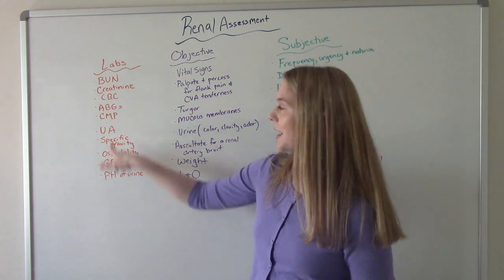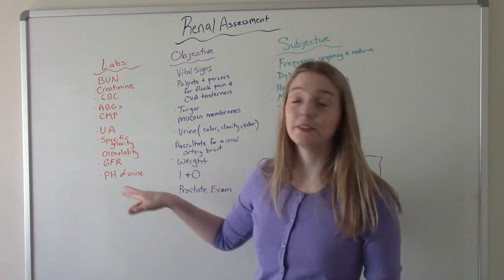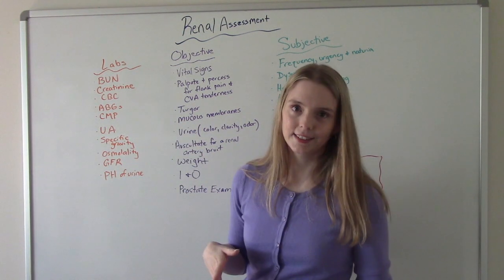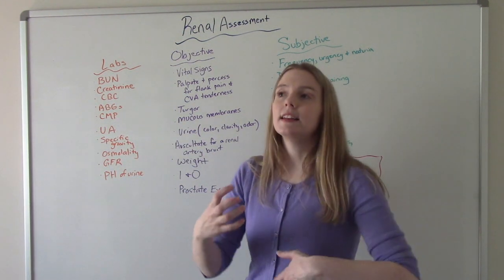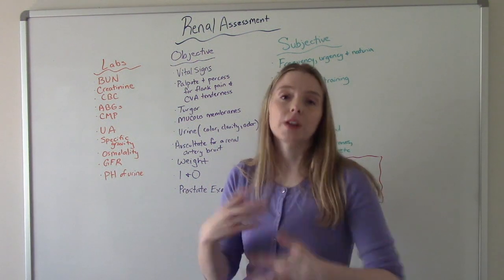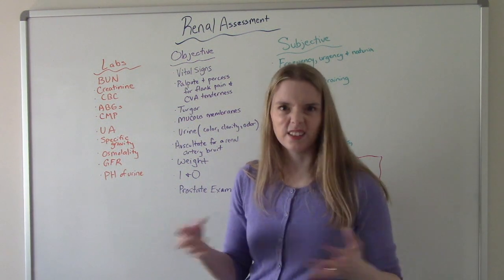The GFR, I know it's kind of by the UA stuff. It's not part of the UA. It's actually a blood test. So how well is the kidneys working to filter out the blood, to filter all the bad stuff out of the blood?